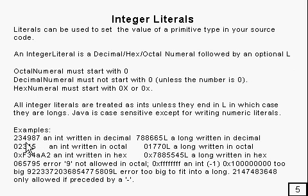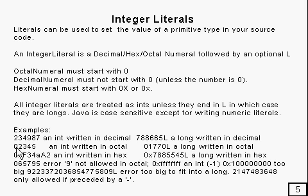Here are some examples. This one is straightforward — it's an int, because it hasn't got an L at the end, and it's decimal. Here's another example — this time it's a long, written in decimal. This is octal, because it starts with a 0, and it's an int because there's no L at the end. And this is octal because it starts with 0, and there is an L at the end, so it's a long written in octal.